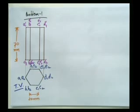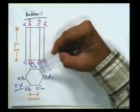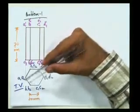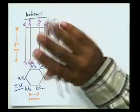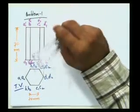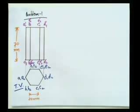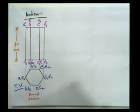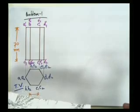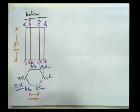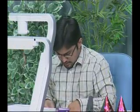What I need to do now is draw the development of the surface — how this has been created. There is one plane, two plane, three plane, four plane, five plane, and six plane. Six sides constitute to make a hexagon, so I'll try to show you this with a foil.